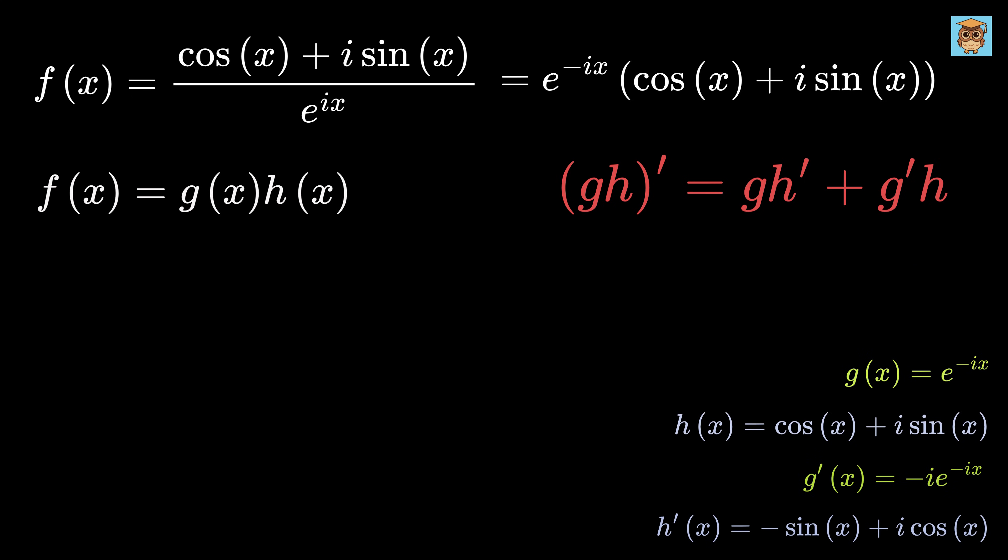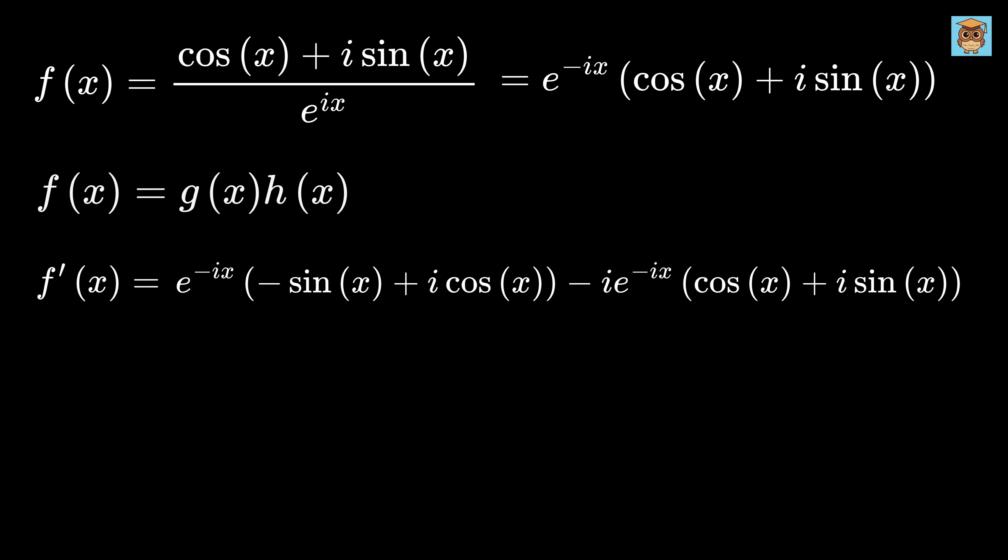Great. Therefore, the derivative of f(x) equals g times h prime or this plus g prime times h or this. Now, let us expand this. This will become minus sin(x) times e to the minus ix. Then this will be plus i cos(x) times e to the minus ix.